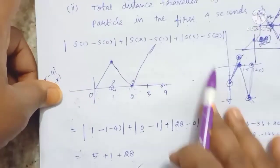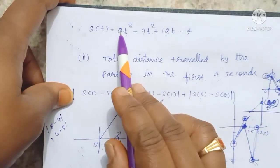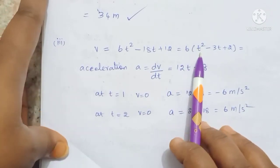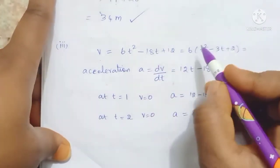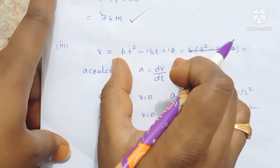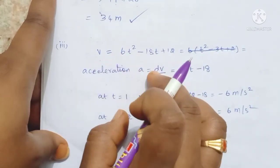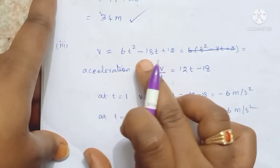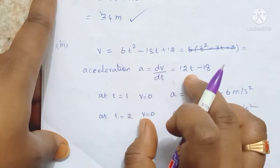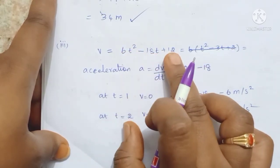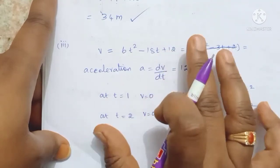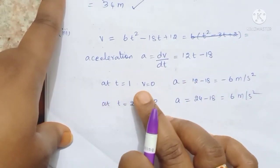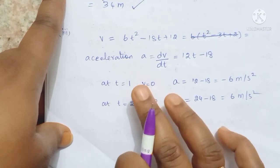Now for the third part: we already have velocity v equals 6t squared minus 18t plus 12. Acceleration is the rate of change of velocity, so a equals dv by dt. Differentiating: 2 times 6 gives 12t, and the derivative of minus 18t is minus 18. So acceleration a equals 12t minus 18. The velocity is 0 at t equals 1 and t equals 2, so we substitute these values.